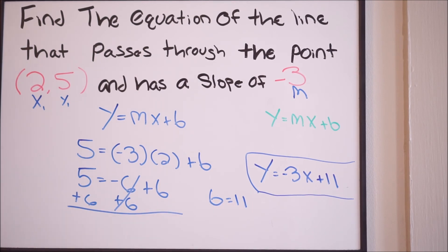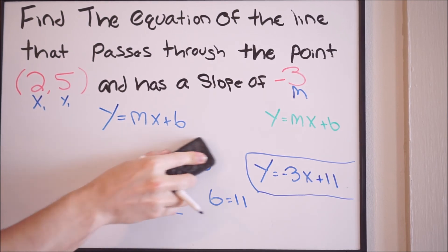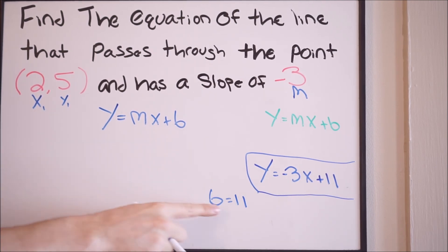Alright, so our last step, we just want to go ahead and put it into slope-intercept form. We determined that b equals 11. So putting it into slope-intercept form, we'll have the following: y equals our slope, which is negative 3, so we plug that in for m, then x, and then our b value here, which is plus 11.